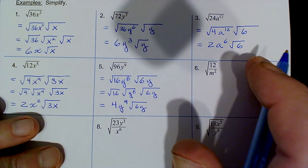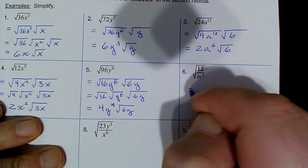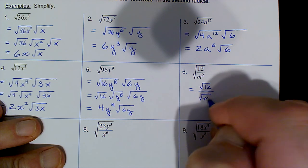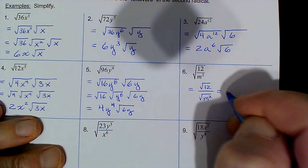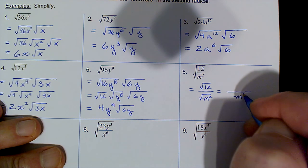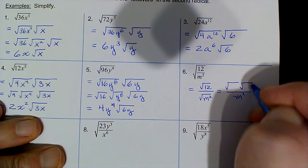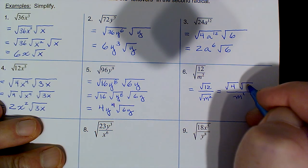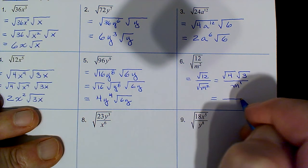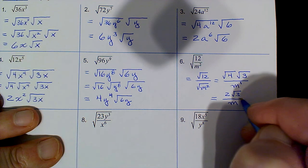Now examples with quotients. Immediately take the square root of the numerator over the square root of the denominator. For √(m²/12): the square root of m² is m. For √12, 4 is a factor and a perfect square, so break it into √4 · √3.